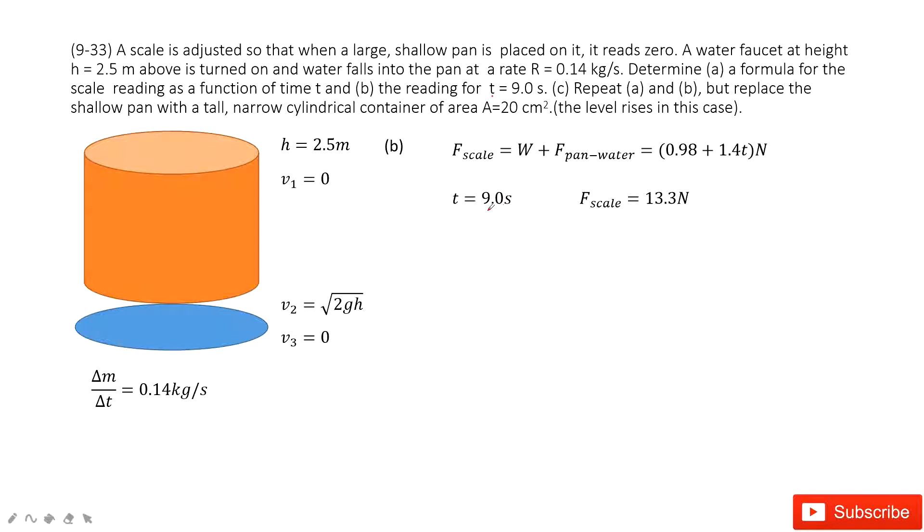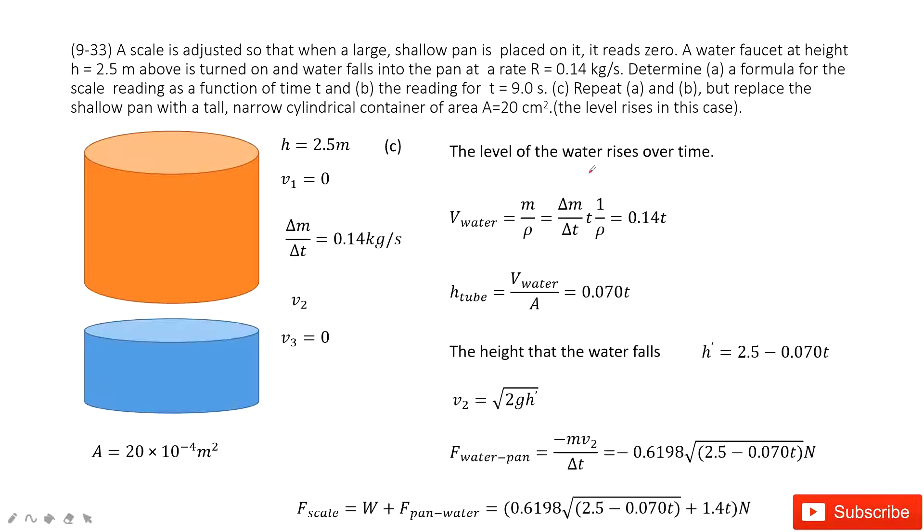If t is 9th second, we just input t equal to 9, we get the final answer. The third one tells us, repeat A and B but replace the shallow pan with a tall narrow cylinder container.